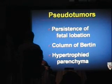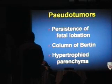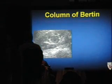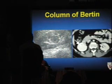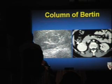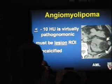Pseudotumors — persistence of fetal lobation, columns of Bertin, hypertrophied parenchyma — can all masquerade as masses. On renal ultrasound you may see an apparently hypoechoic portion of the mid kidney, but on CT you can see it's just normal enhancing renal parenchyma. Columns of Bertin behave on all phases as renal parenchyma.